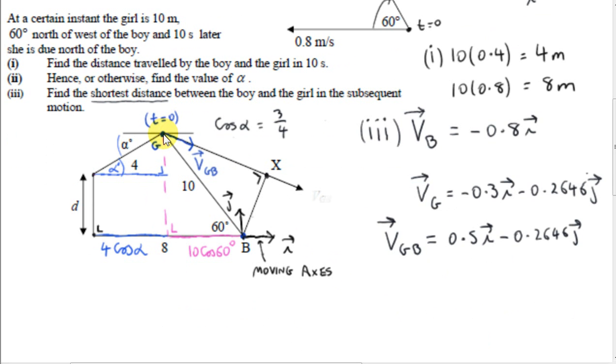So at t equals 0, the girl is here, a distance of 10 from the boy. And we have this angle of 60 degrees. That means that we have this angle here. This angle here must also be 60 degrees. So this angle and this angle form a pair of Z angles or alternate angles.